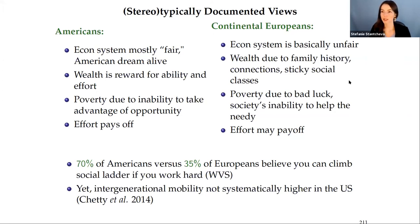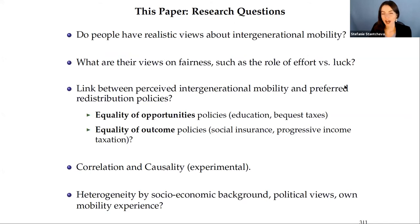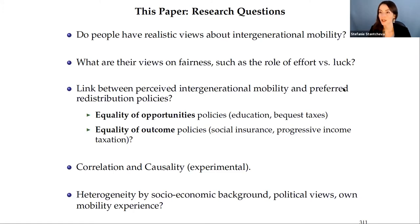We now have much better data on social mobility collected across different countries. Intergenerational mobility today is absolutely not systematically higher in the US than in Europe, which prompted us to ask: do people have realistic views about mobility? Beyond quantitative views, what are their views on fairness, how many chances do people have of making it, and what's the role of effort versus luck? Existing theories suggest that the more you believe in equality of opportunity, the more willing you are to tolerate inequality of outcomes, since outcomes are more likely to reflect individual merit.